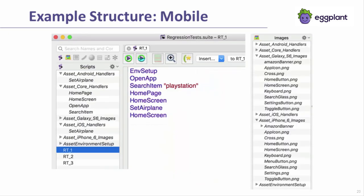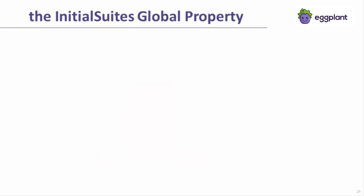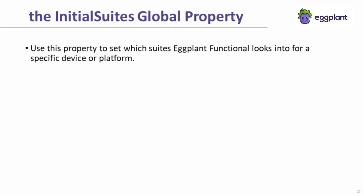Here's another example in the context of mobile automation. Note the way the images have been organized into separate suites for the Galaxy S6 and iPhone 6. Adding the lower levels of suites as helpers to the calling suite provides an easy way to view the scripts and images of those suites within the calling suite. However, the helper suite relationship does not properly set up suite relationships for test execution. When executing a test, we must tell eggplant which suite or suites to get the appropriate version of a script or image from.